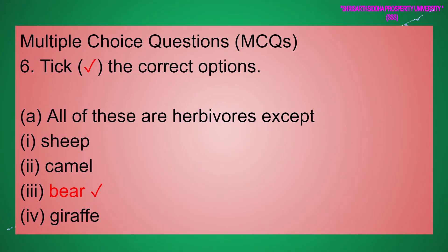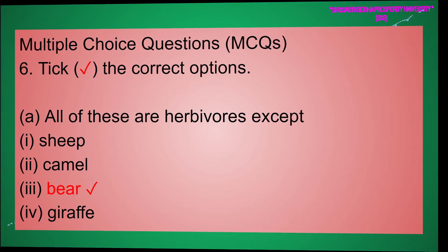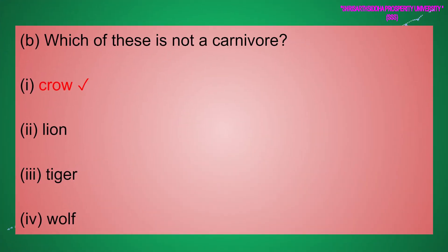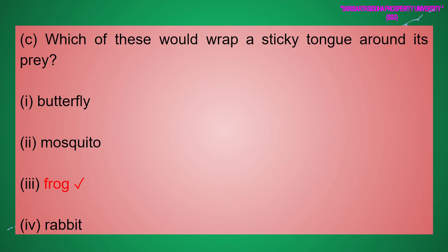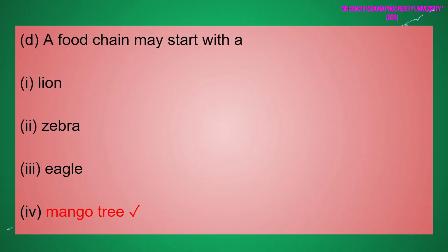Six: Multiple choice questions. Tick the correct options. (a) All of these are herbivores except — sheep, camel, bear, giraffe. The answer is bear. (b) Which of these is not a carnivore — crow, lion, tiger, wolf? The answer is crow. (c) Which of these would wrap a sticky tongue around its prey — butterfly, mosquito, frog, rabbit? The answer is frog. (d) A food chain may start with — lion, zebra, eagle, mango tree. The answer is mango tree.